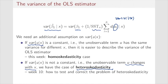Notice that the unbiasedness of the estimators does not rely on the conditional variance. When we prove the unbiasedness of β̂₁ and β̂₀, we do not need to use the variance of the error term. So no matter whether the error term is homoskedastic or heteroskedastic, the estimators are always unbiased when assumptions 1 to 4 hold.